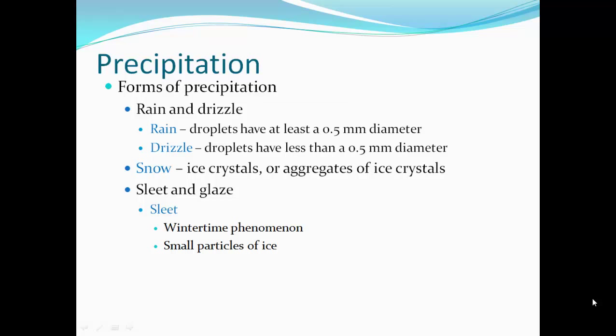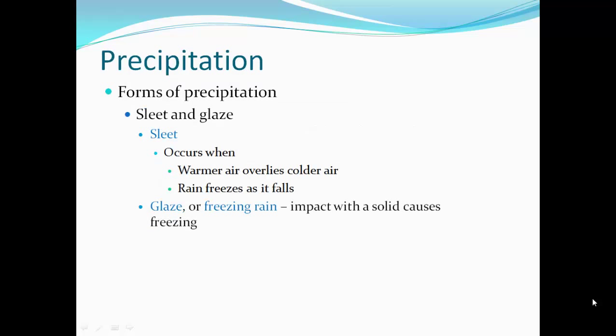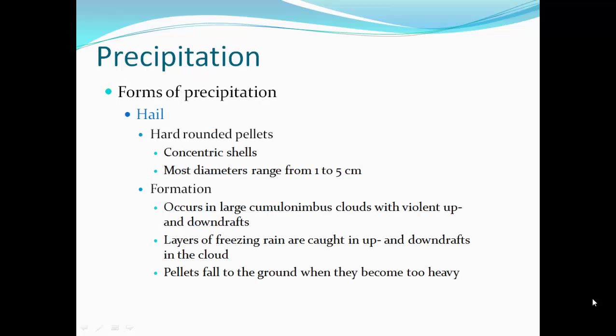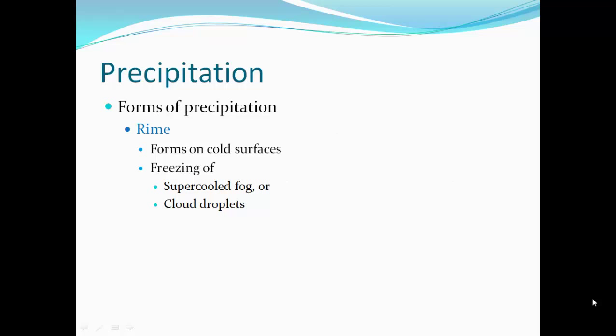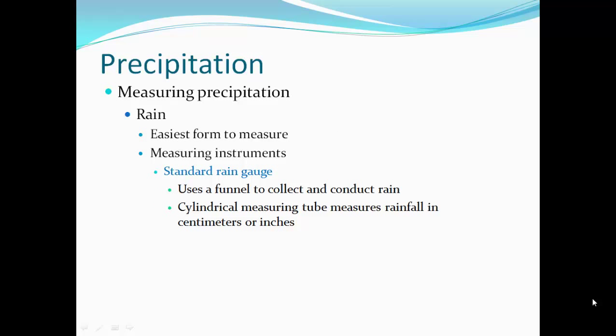Forms of precipitation: rain droplets are at least half a millimeter in diameter; drizzle droplets are less than half a millimeter. Snow can be ice crystals or aggregates of ice crystals. Sleet is a wintertime phenomenon where warm air overlies colder air and rain freezes while falling. Freezing rain occurs when the ground is really cold and water hitting the ground forms ice — black ice is dangerous to travel in. Hail forms pale, hard, round pellets with concentric shells of ice, most ranging from one to five centimeters, formed in cumulonimbus clouds with violent up and down drafts where layers of freezing rain are caught repeatedly.